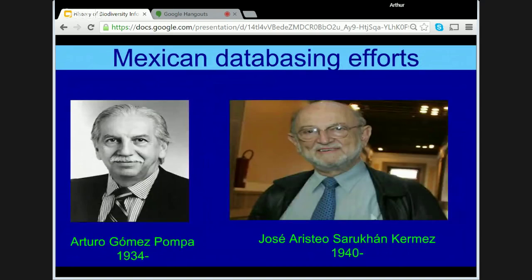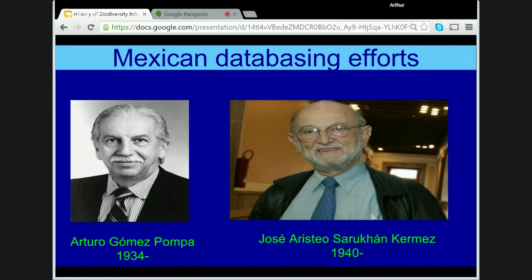Meanwhile, the 1970s saw similar initiatives beginning in other parts of the world. In Mexico, Arturo Gomez Pompa and later Jose Suracan began a project to computerise the collections of the National Herbarium of Mexico using ad hoc software that later morphed into Biotica. As early as the 1960s, Gomez Pompa had been active in computerisation of biodiversity, compiling a database of native plants of the Mexican state of Veracruz. In 1979, Gomez Pompa along with Giddings and others initiated bioclimatic profiling for the flora of Veracruz project.